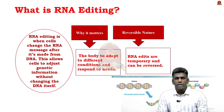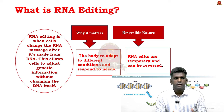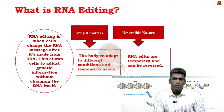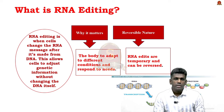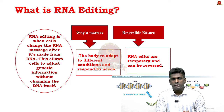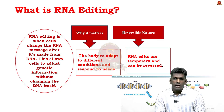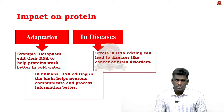RNA editing is when a cell changes the RNA message after it is made from DNA, allowing cells to adjust genetic information without changing the DNA itself. This can change how a protein works, allowing the body to adapt to different conditions. Unlike DNA changes, which are permanent mutations, RNA editing is temporary and reversible. Certain enzymes — for example, APOBEC enzymes — change cytosine to uracil. RNA editing can occur in any part of RNA, but if it happens in protein-coding areas, it can change how proteins function.